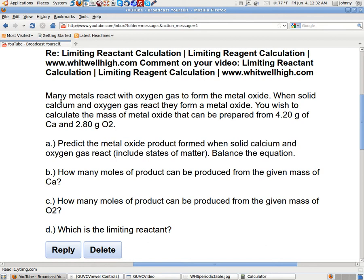Let's go ahead and read this. It says many metals react with oxygen gas to form a metal oxide. When solid calcium and oxygen gas react, they form a metal oxide. You wish to calculate the mass of the metal oxide that could be prepared from 4.20 grams of Ca and 2.80 grams of O2. Question A: Predict the metal oxide that would be kind of easy to do. Forms when solid calcium and oxygen gas react. Include the states of matter. Balance the equation. Alright, let's go ahead and get started with that.